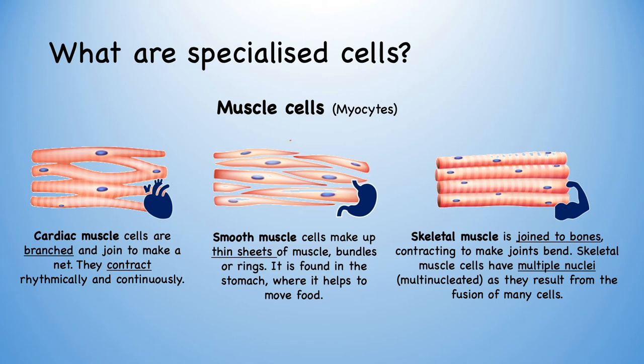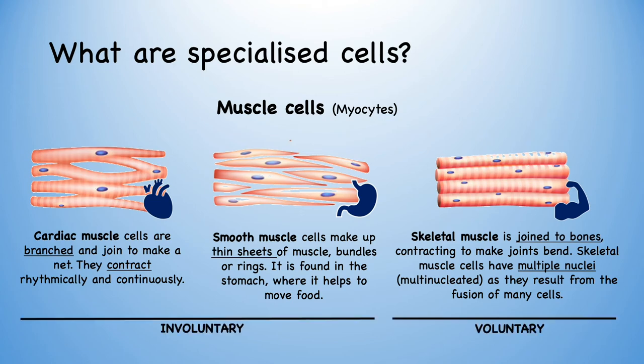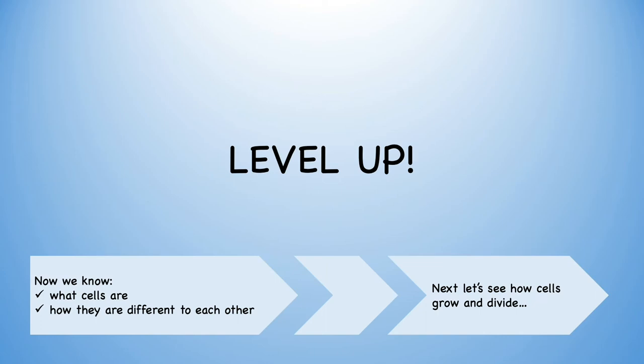We can refer to muscles as being involuntary or voluntary. Cardiac and smooth muscle are involuntary, as we do not have to think about contracting them, whereas skeletal muscle is voluntary, as we have control over whether we move our legs to run or lift our arms to stretch in the mornings. Now let's see how cells grow and divide.